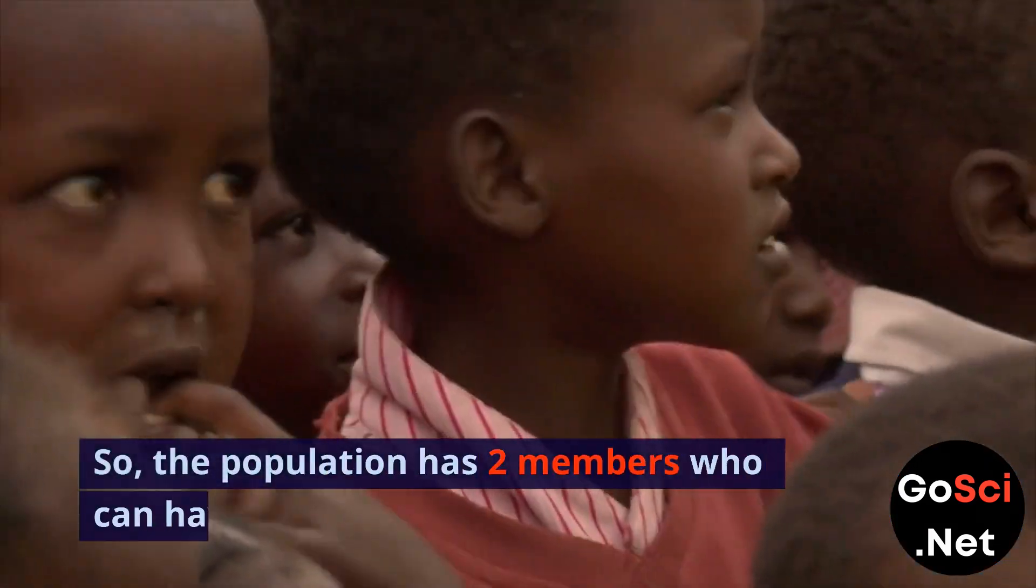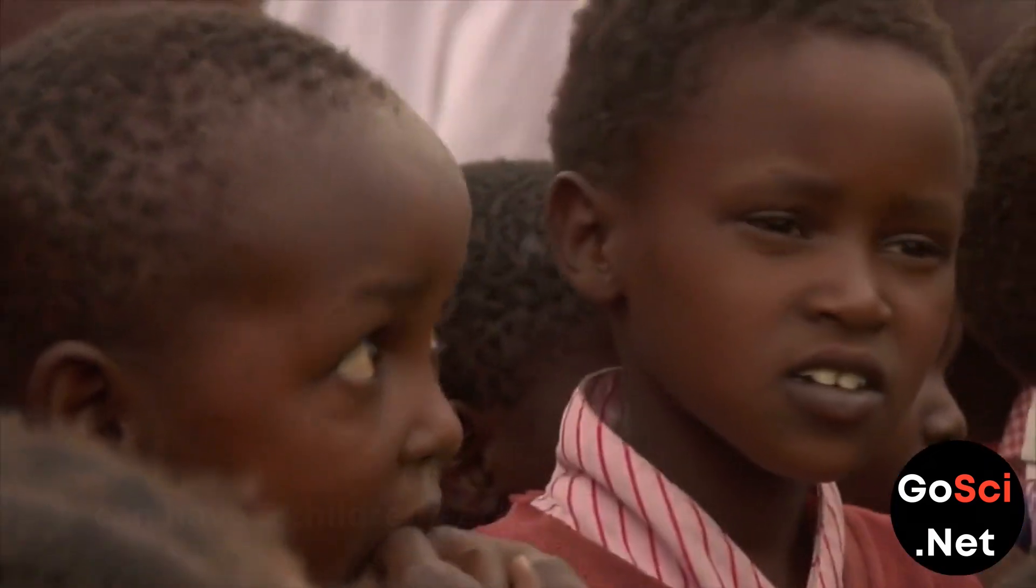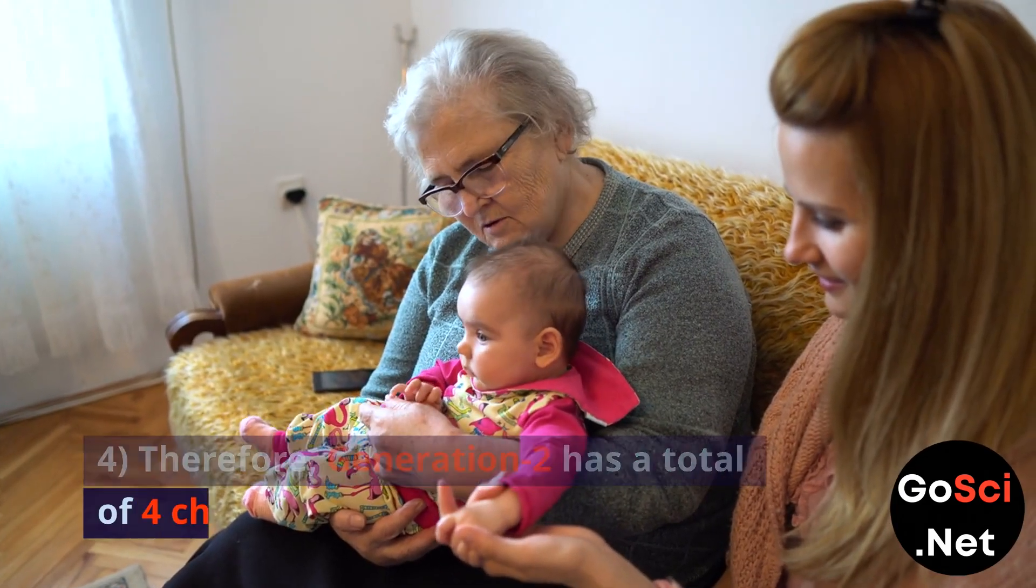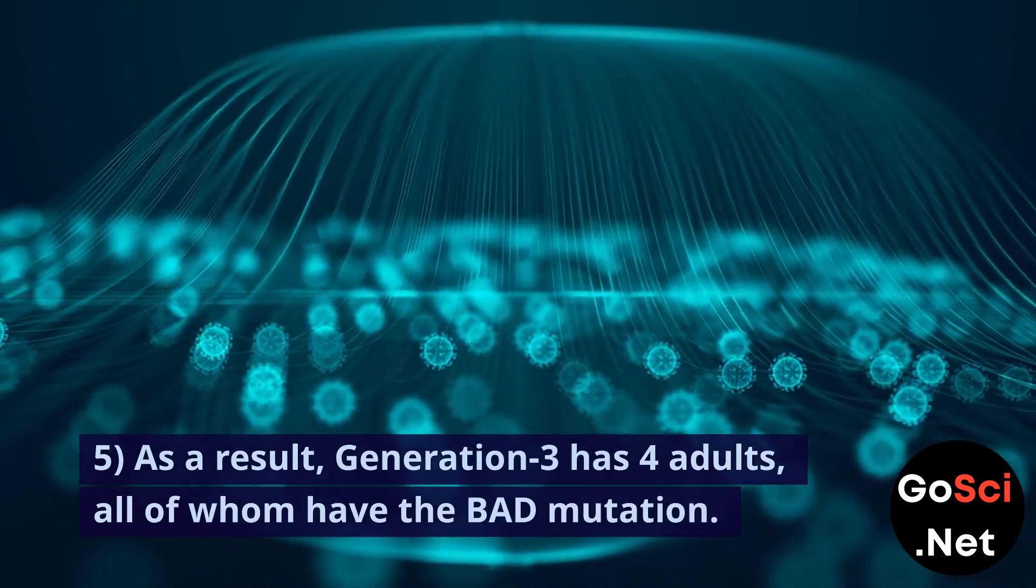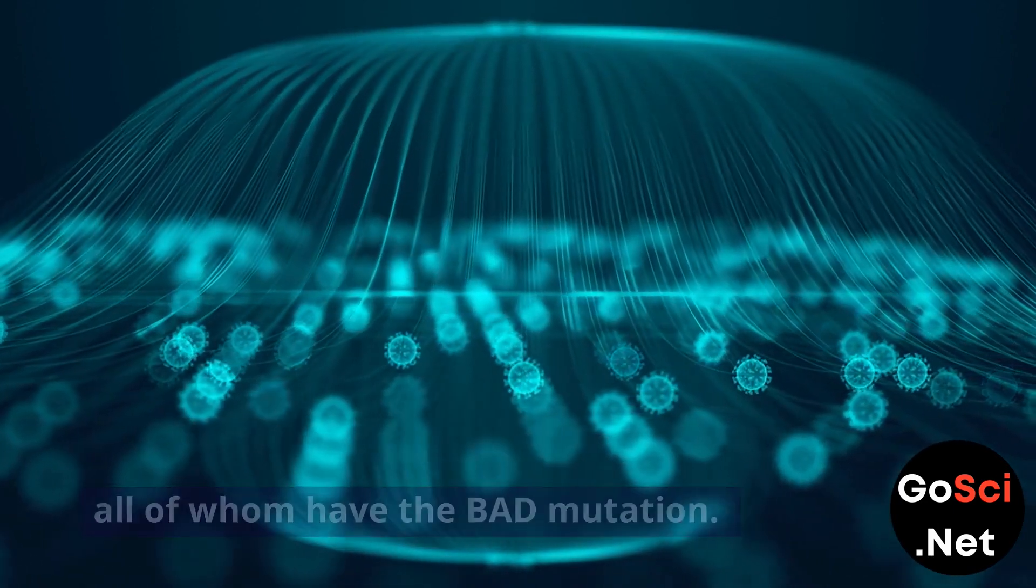So the population has 2 members who can have 2 children each. Therefore, Generation 2 has a total of 4 children. As a result, Generation 3 has 4 adults, all of whom have the bad mutation.